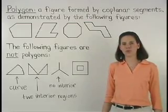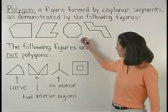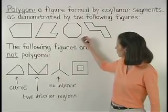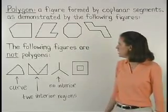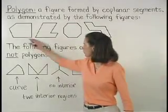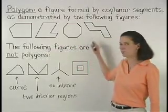Also note that in a polygon, each end point must be shared by two segments in the figure, as demonstrated by the first group of polygons on the board.